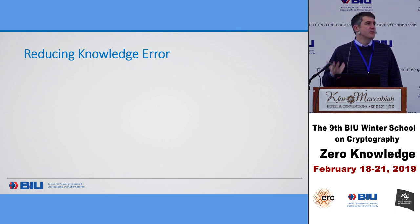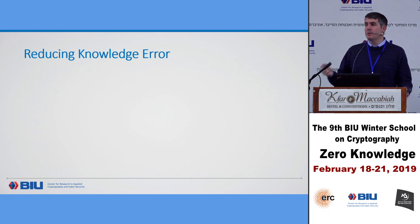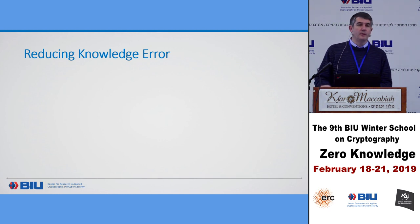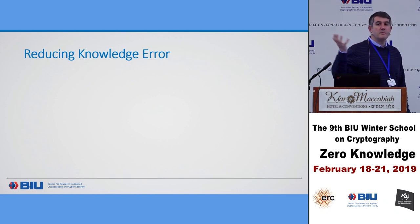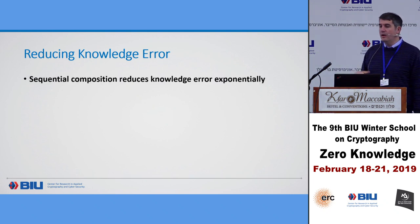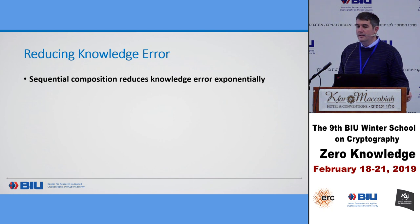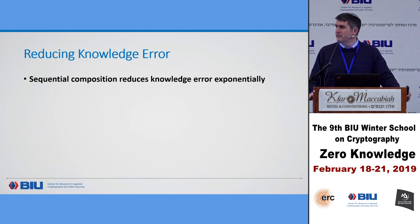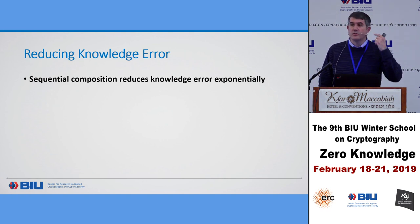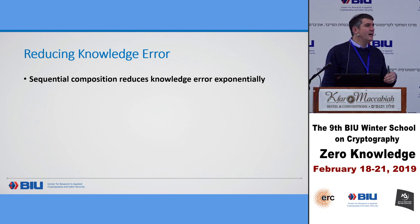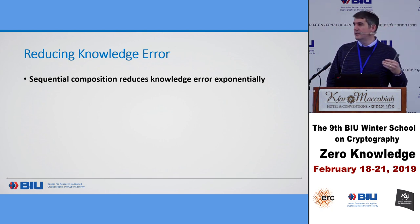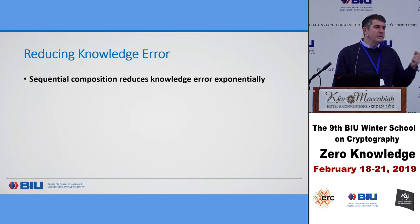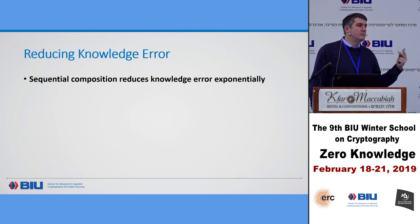Just like with soundness, we have questions about composition. If I start with a protocol having soundness one-half, can I get negligible soundness? Yes — run it n times sequentially and get 2-to-the-minus-n soundness. The same is true of knowledge error: sequential composition reduces the knowledge error exponentially. If I have probability one-half of extracting in every execution and n executions, the probability of failing to extract in all of them becomes negligible.